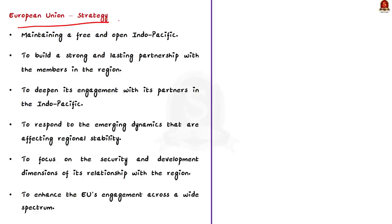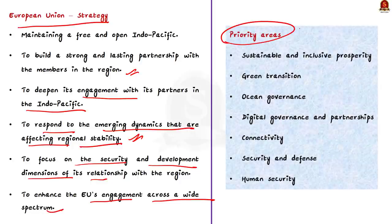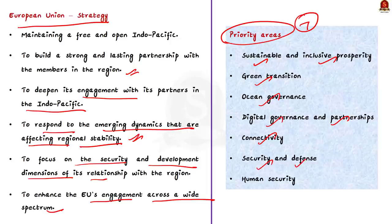The EU aims to maintain a free and open Indo-Pacific for all while building a strong and lasting partnership with members in the region. The EU attempts to deepen its engagement with Indo-Pacific partners to respond to emerging dynamics affecting regional stability. The strategy enhances EU engagement across a wider spectrum and highlights seven priority areas for action: sustainable and inclusive prosperity, green transition, ocean governance, digital governance and partnership, connectivity, security and defense, and human security.